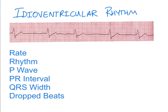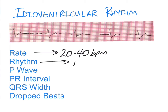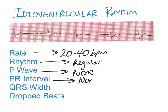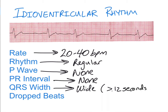In this video we're going to be talking about something called idioventricular rhythm. The rate of an idioventricular rhythm will be generally between 20 and 40 beats per minute. The rhythm will be regular, there will be no P waves and therefore no PR interval, and the QRS complexes are going to be wide — the definition of wide being greater than 0.12 seconds — and there are no dropped beats with an idioventricular rhythm.